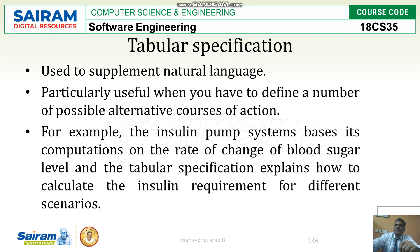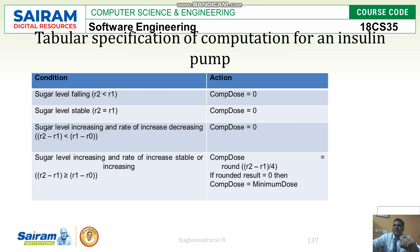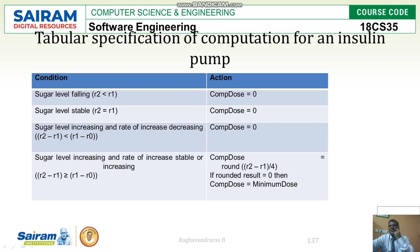Another way of specifying requirements is using a tabular column. The same insulin pump example continues here. In the table, condition and action are specified. For example: sugar level falling means r2 is less than r1, so the dose is zero. Sugar level stable means both r2 and r1 are equal, so the composition is also zero. Then sugar level increasing with rate of increase decreasing is another condition.